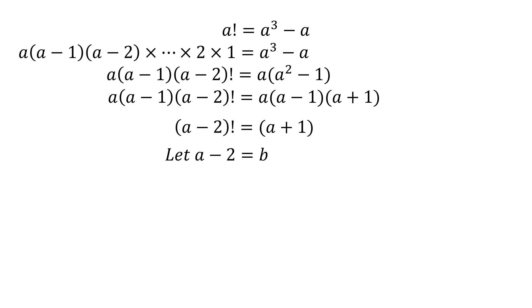We substitute a minus 2 with another variable. Let a minus 2 equal b. If that's the case, then a is equal to b plus 2. Now we can replace a minus 2 with b and a on the right-hand side with b plus 2. So we have b factorial equals b plus 2 plus 1, which means b factorial equals b plus 3.